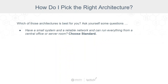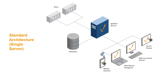How do I pick the right architecture? The next question: do you have a small system and a reliable network, and can you run everything from a central office or a server room? This is our standard architecture — sometimes I also call it our basic architecture. This would be the simplest type of architecture that you can have.